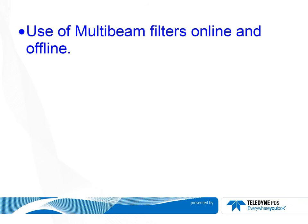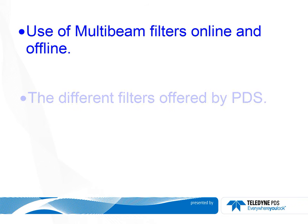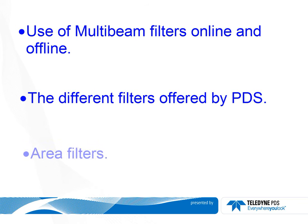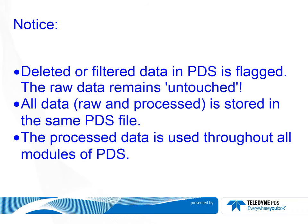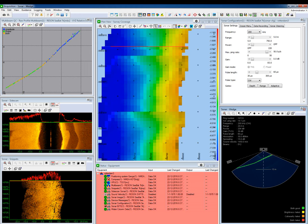In this movie we will demonstrate the use of multibeam filters, both online and offline. The different filters are offered by PDS. Notice that deleted or filtered data in PDS is flagged — the raw data remains untouched. This means you can always revert back to the raw data. All data, raw and processed, is stored in the same PDS file. The processed data is used throughout all modules of PDS, such as the grid and model editor. Multibeam filters may be used in the online PDS real-time acquisition or in the offline processing application.